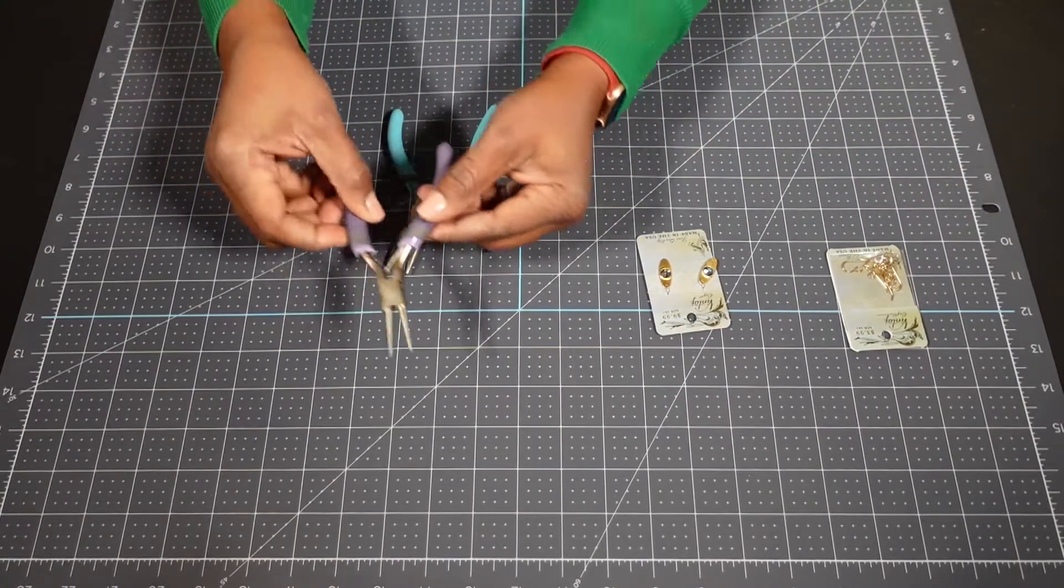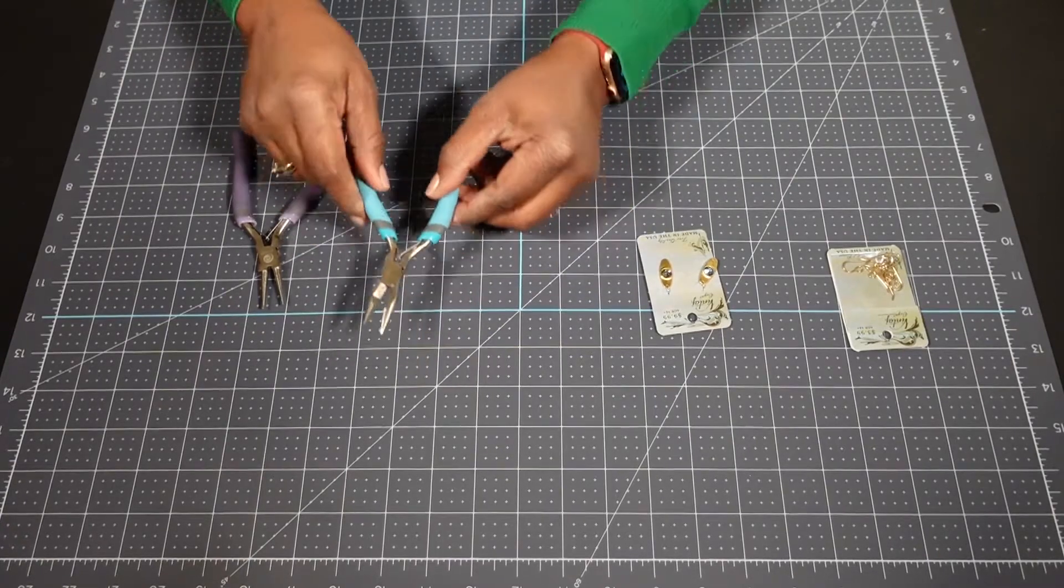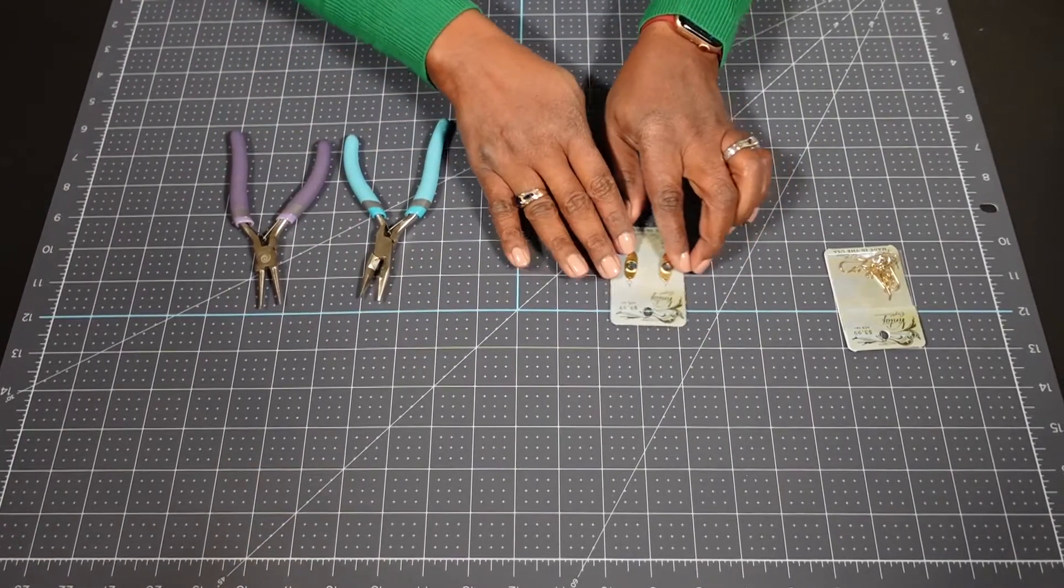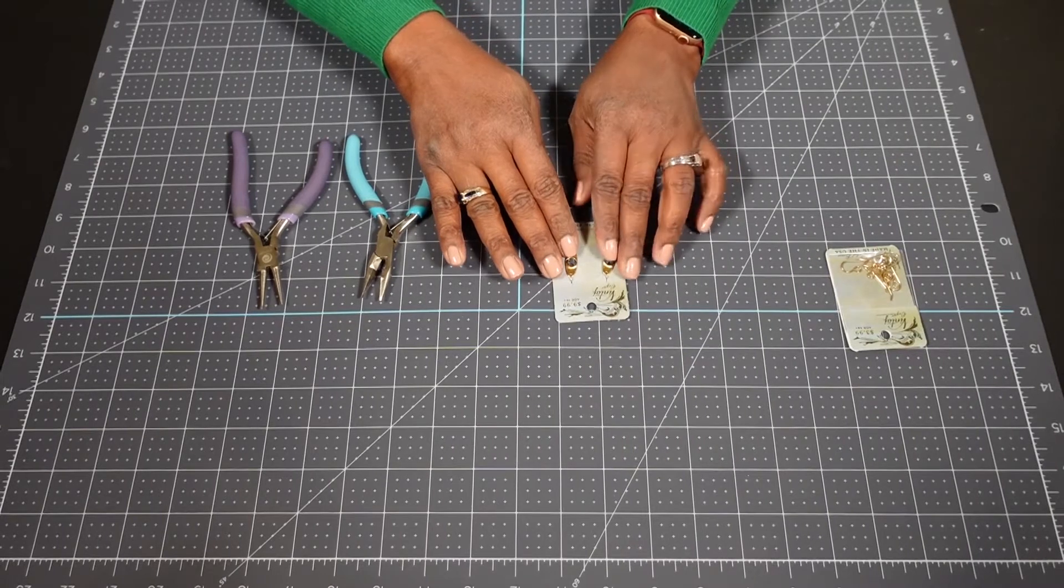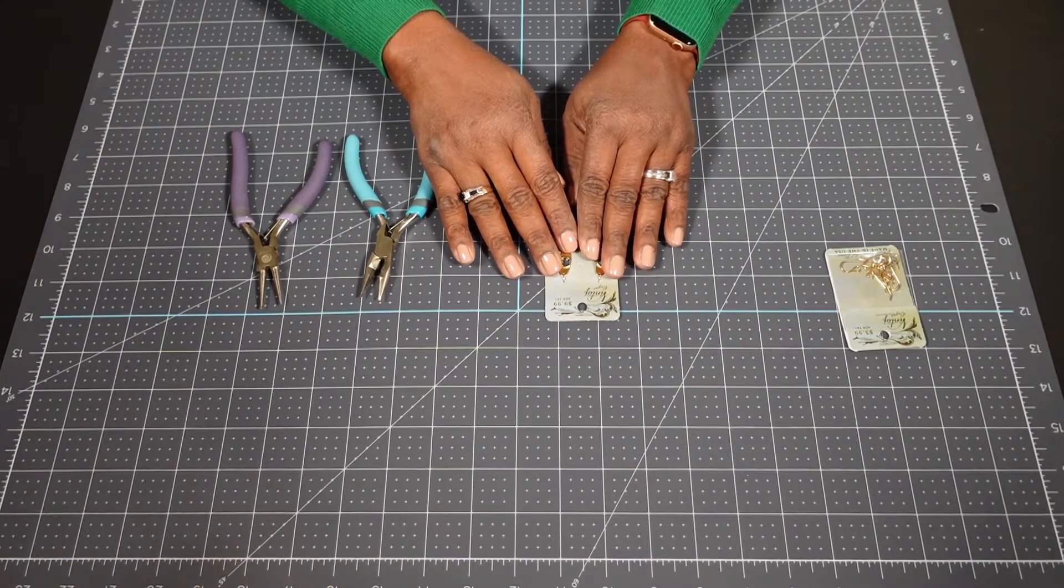You're also going to need a pair of round nose pliers and a pair of flat nose pliers. And because the holes in these particular pendants are big enough, we won't need jump rings for this. So this is a very easy beginner project.